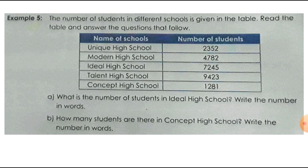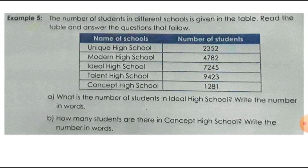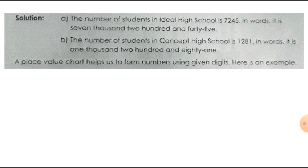How do we read and write that number? 7,245 — you write it in words as: seven thousand, two hundred and forty-five. This is how you can write the answer for that question.